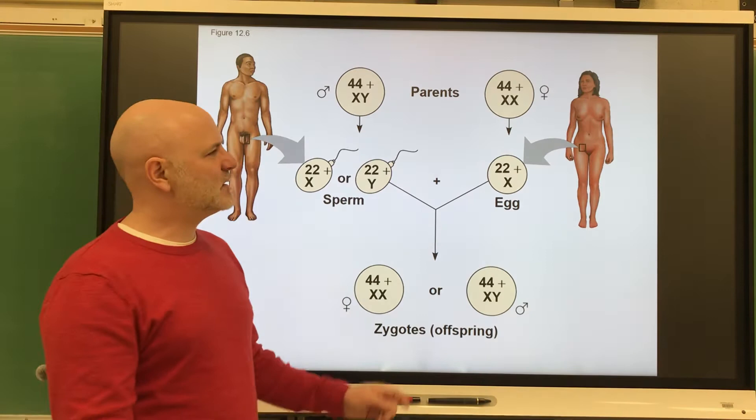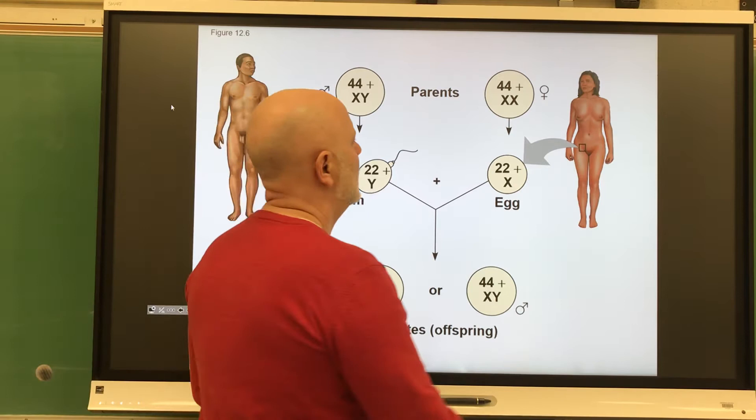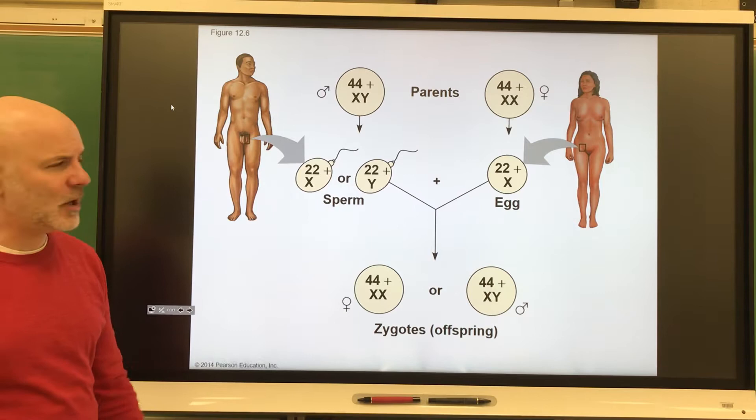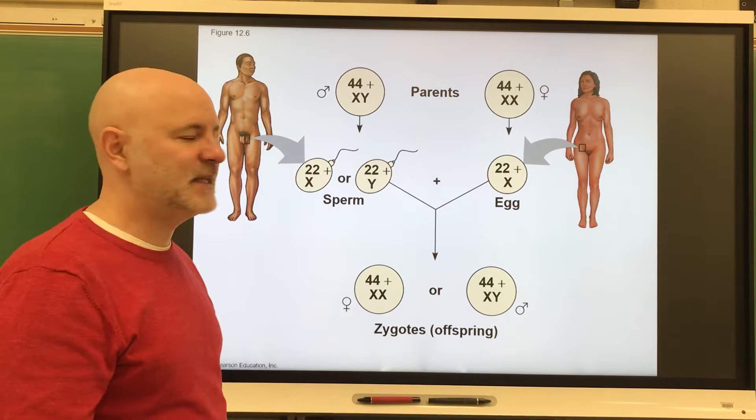Next is the homogametic sex, and this is a sex with two of the same sex chromosomes. That's what we see in mammals that are the females, so you have two X chromosomes. Males, once again, have an X and a Y chromosome. With birds, the males are the homogametic sex. They're what we call ZZ.